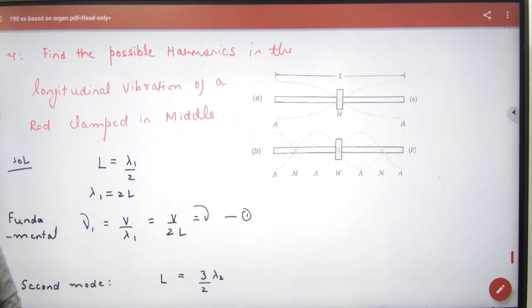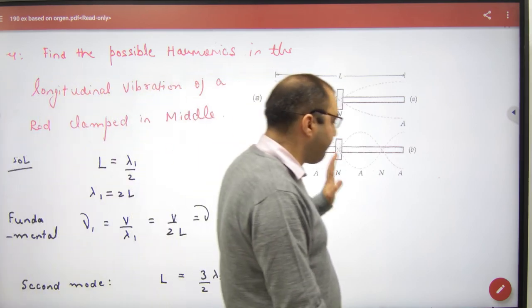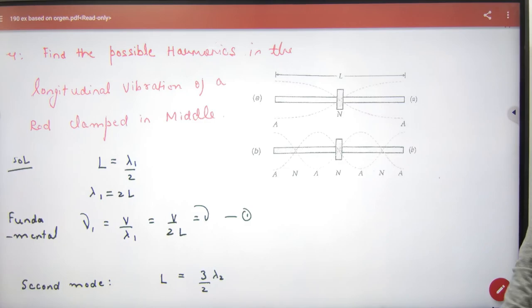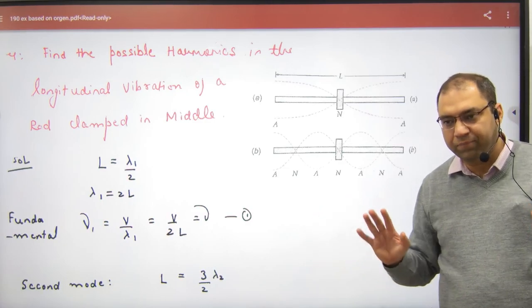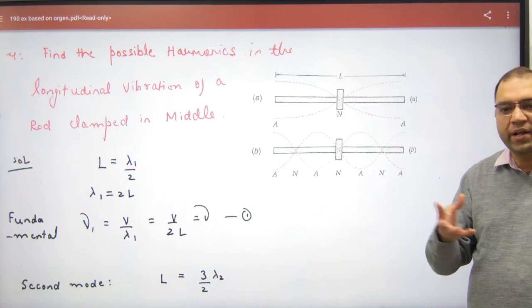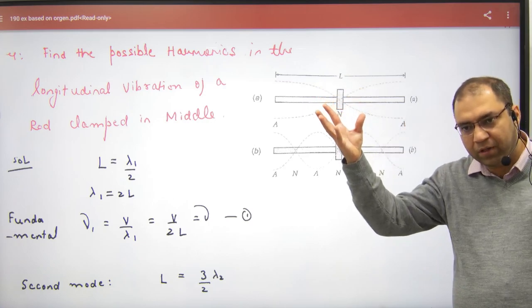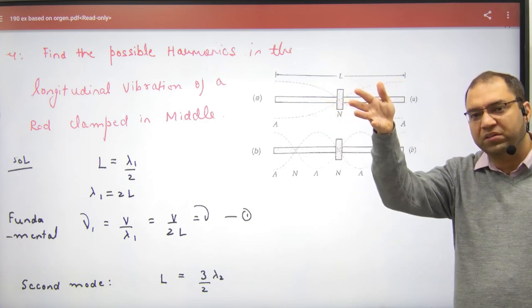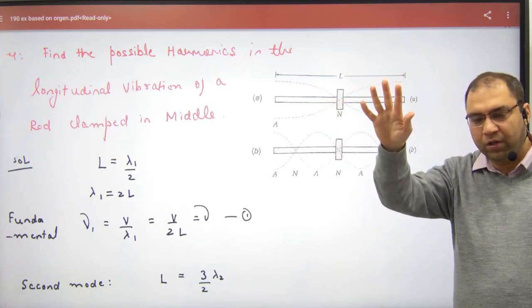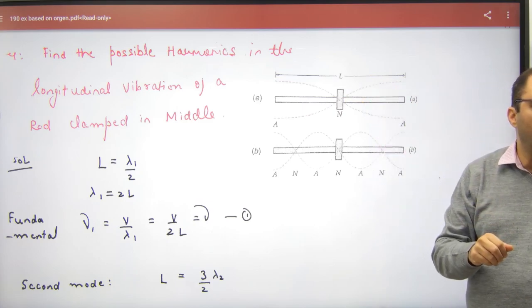Okay, now a new case. Find possible harmonics in the longitudinal vibration of rod clamped in the middle. We make node anti-node patterns for harmonics. When the first fundamental mode will become diagram?